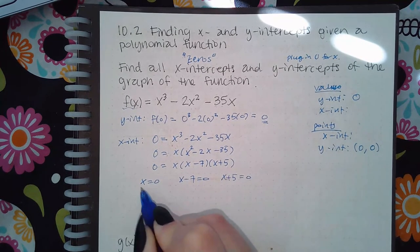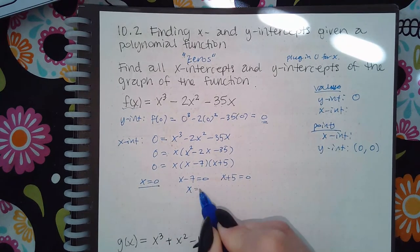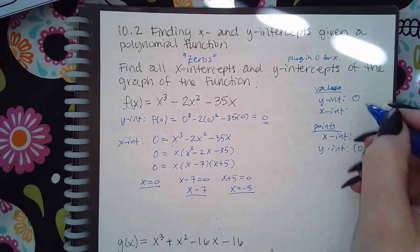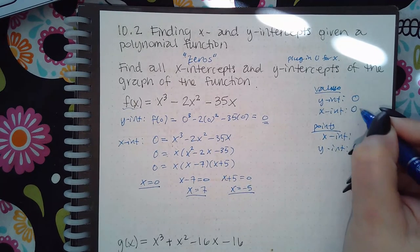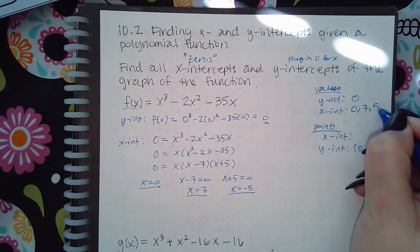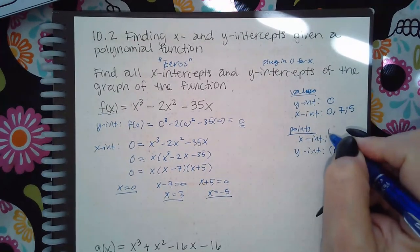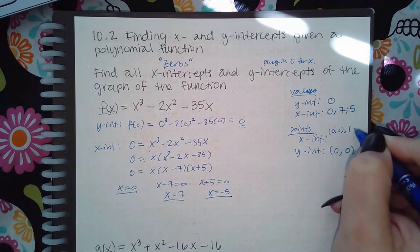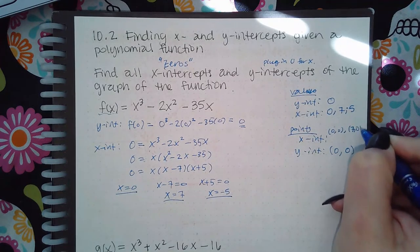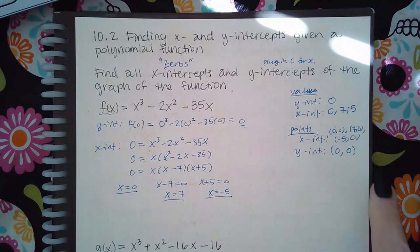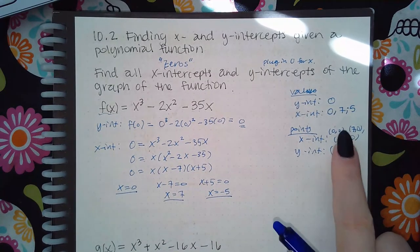So I get x equals 0, x equals 7, and x equals negative 5. If they just want the values, you're going to put 0, 7, and negative 5. If they want the points, you have to give them (0,0), (7,0), and (-5,0), all of the x values you found and the y values should be zero.